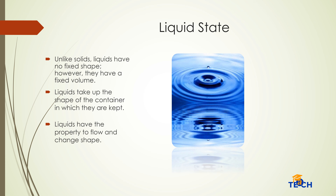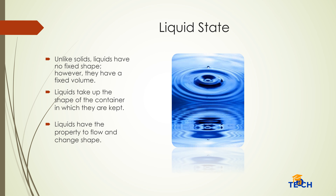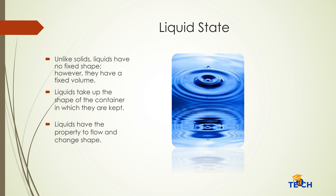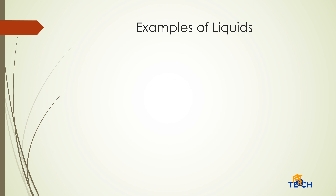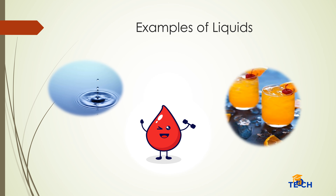Unlike solids, liquids have no fixed shape. However, they have a fixed volume. Liquids take up the shape of the container in which they are kept, and have the property to flow and change shape. Some examples of liquids are water, blood, and juices.